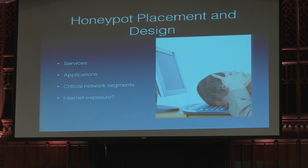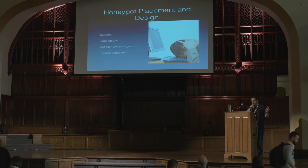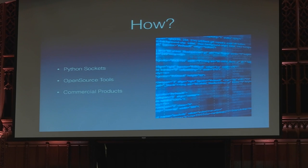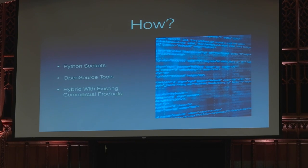I want to briefly go over how you can design and place these systems. It's important to try to mimic your own infrastructure when you do this — whether that's putting services your organization hosts, whether it's FTP systems, mail systems, or applications your organization uses. That way an attacker doesn't actually know what it is they're viewing. You can use something as simple as a Python socket to monitor that traffic and see if anybody within your network is crawling around looking for FTP servers or open mail relays on an SMTP server.